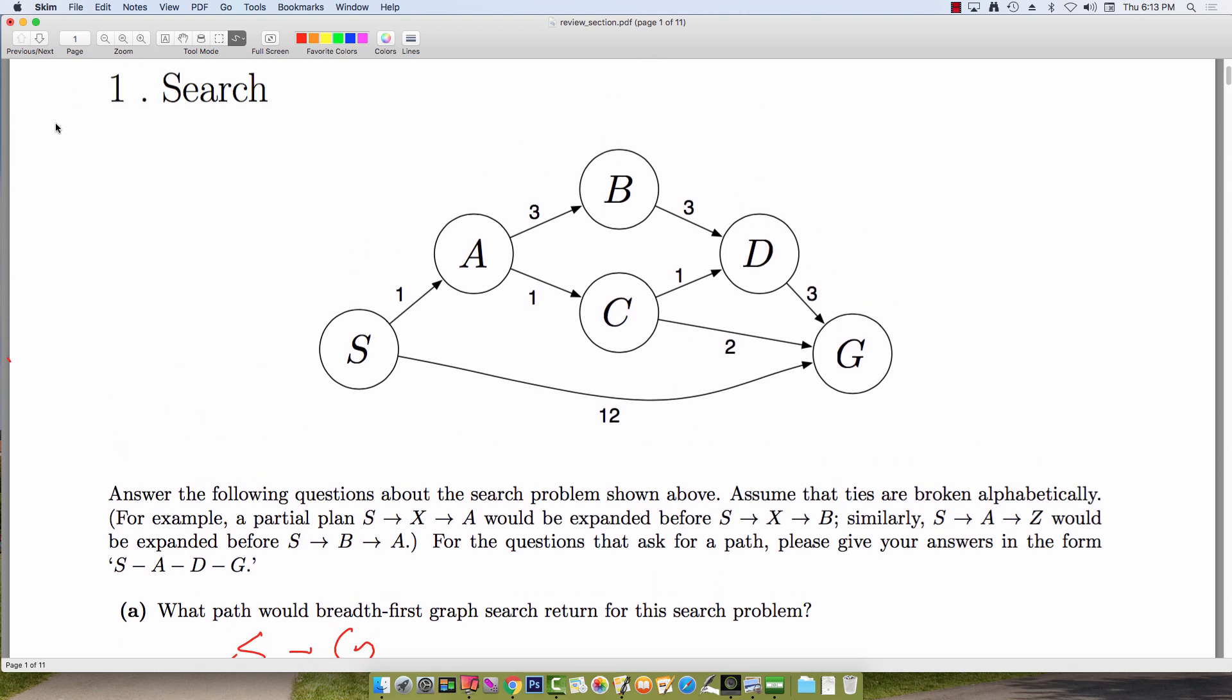So we'll again start with S in our fringe. We'll insert A and G. But A now has a cost of 1 and G has a cost of 12. So I'll have A, which came from S with cost 1. And then G, which came from S with cost 12.